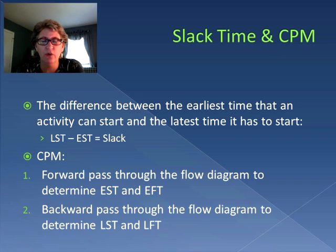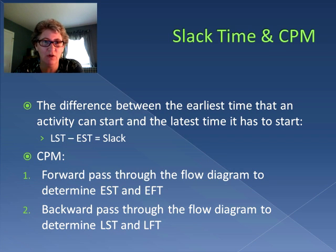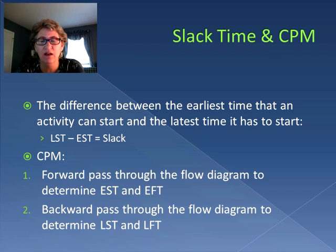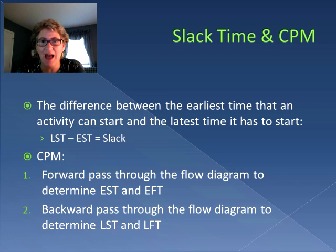We know that the critical path is the longest path through the entire process, but some paths are shorter in time. So that means there's room for delay, and that's what we're looking at. We're trying to figure out how much time there is between when an activity can start — which is the earliest time it can start — and when an activity has to start, which is the latest time it has to start. Slack can be said to be the difference between the latest start time (LST) and the early start time (EST). That tells us how long an activity can be delayed before it has to be done.